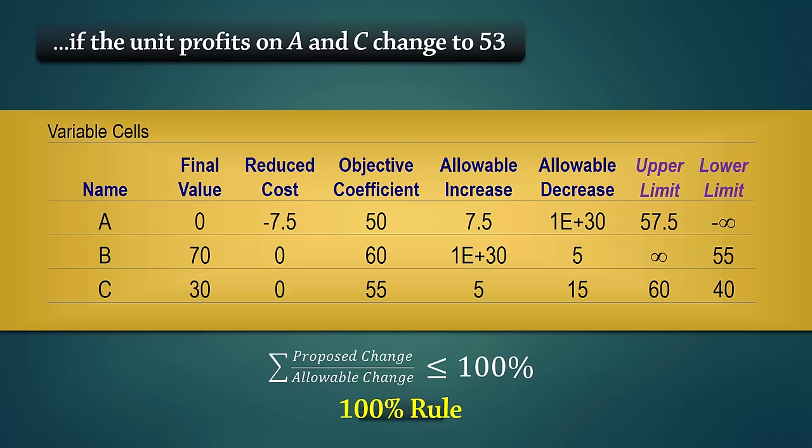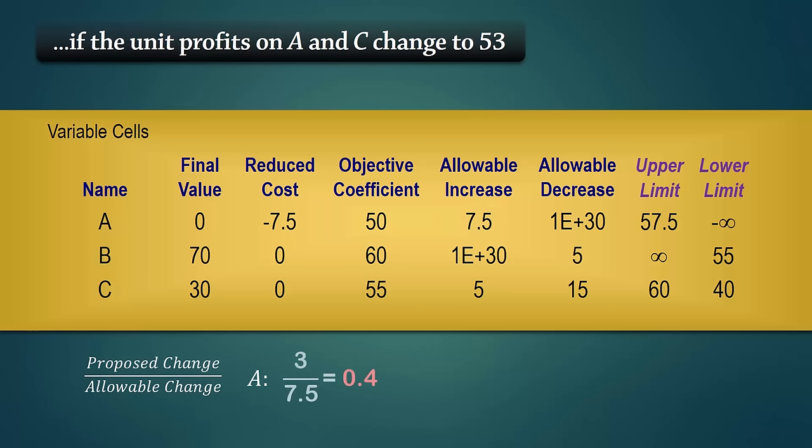The proposed increase in A is 53 minus 50, which is 3. And the allowable is 7.5, giving a ratio of 0.4. Whereas for C, the proposed decrease is 55 minus 53, which gives 2, with an allowable decrease of 15, giving a ratio of 0.133. The sum of these ratios is 53.3%, which is less than 100%. So the optimal solution will remain optimal. And the total profit becomes 5790.